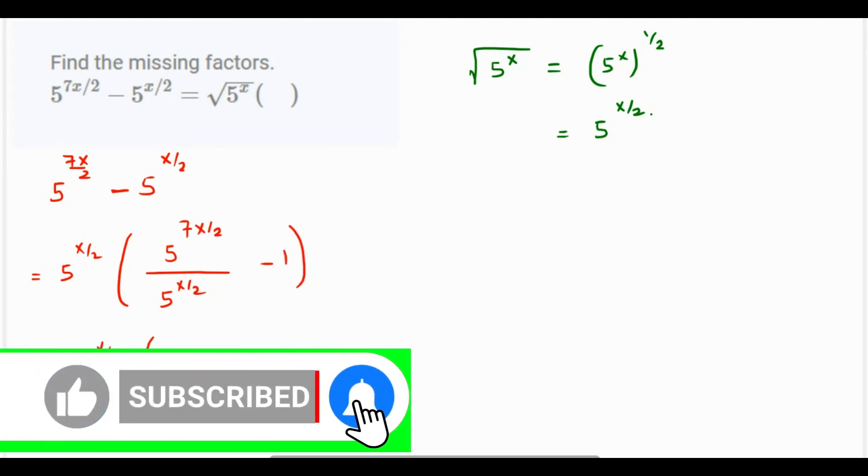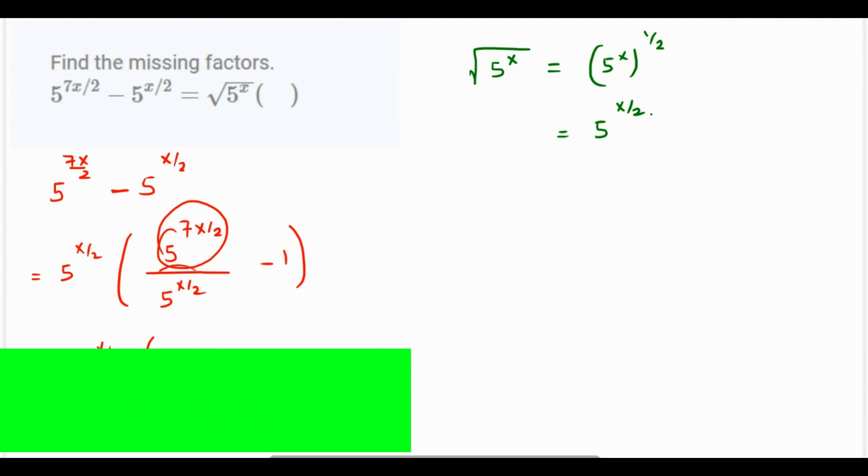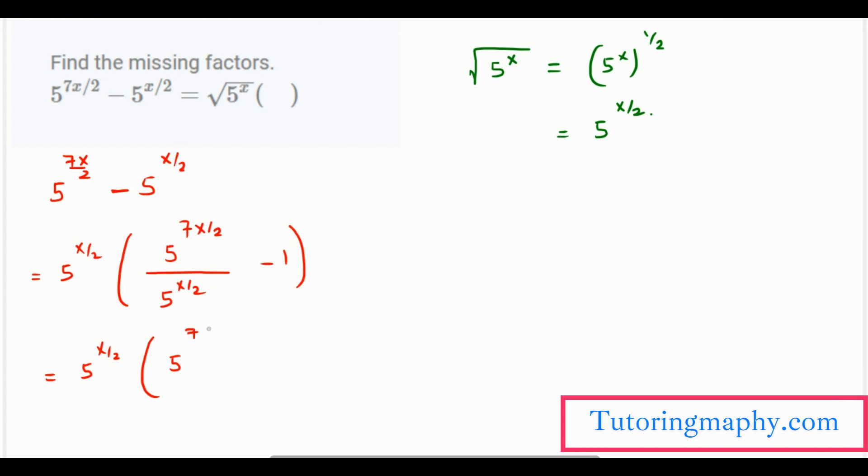This can be written as 5 raised to... since there are two exponents which are in a division and their base is the same, their powers will be subtracted. So we have 5 raised to 7x over 2 minus x over 2, and minus 1 remains as it is.